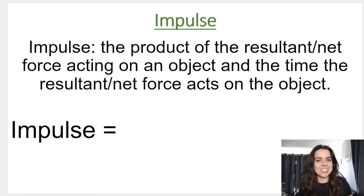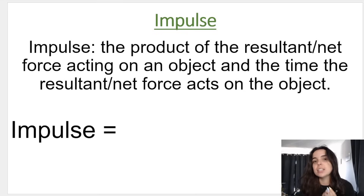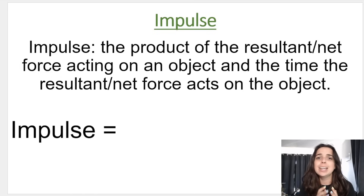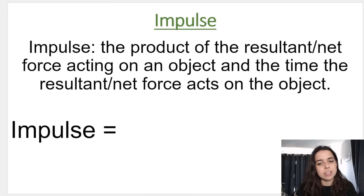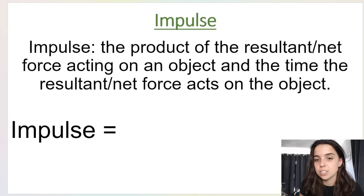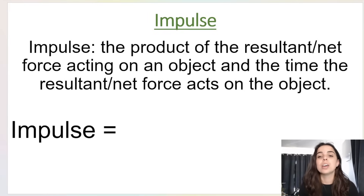First things first, what is impulse? In order to understand impulse I want to show you the definition, which you see above, as well as the formula which we will write here together. You absolutely need to know this definition for matric — for your junior exams, prelims, and finals. If you get the wording incorrect or leave out important key terms, you can get marks deducted. Impulse is defined as the product of the resultant or net force acting on an object and the time that the resultant or net force acts on the object.